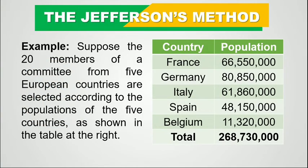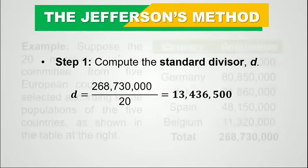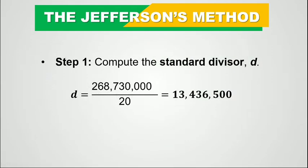Let's try this example to understand the steps of the Jefferson's method. Suppose 20 members of a committee from five European countries are selected according to their populations as shown in the table. We have France, Germany, Italy, Spain, and Belgium with their respective populations, and the total is 268,730,000. The first step is to compute the standard divisor: 268,730,000 divided by 20 equals 13,436,500. This is our standard divisor.